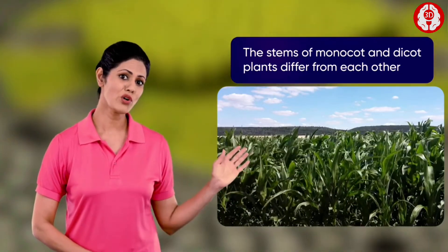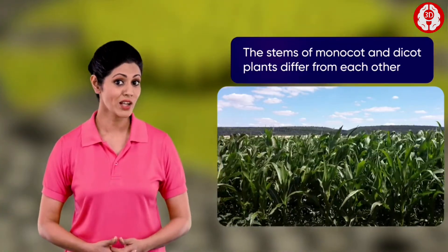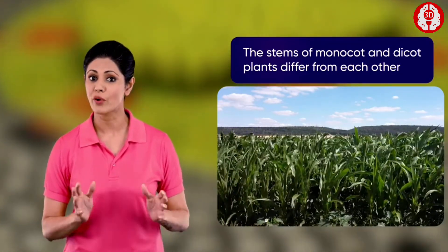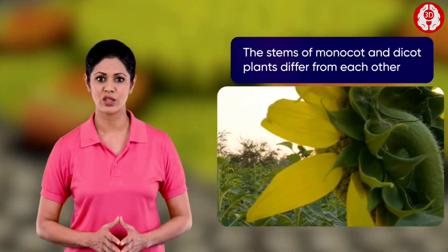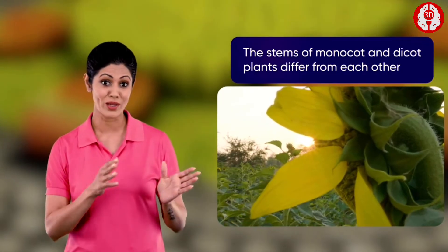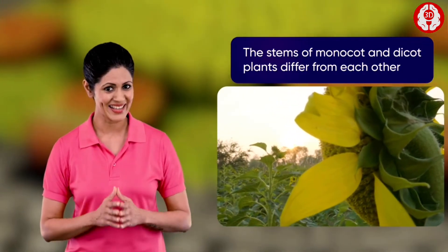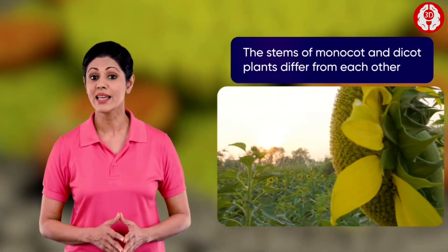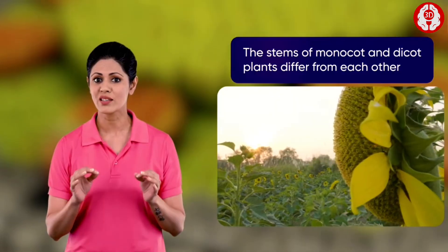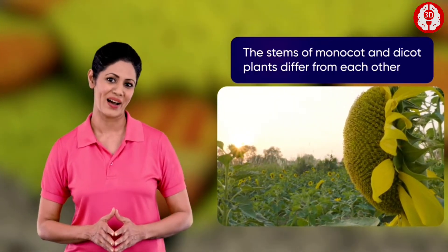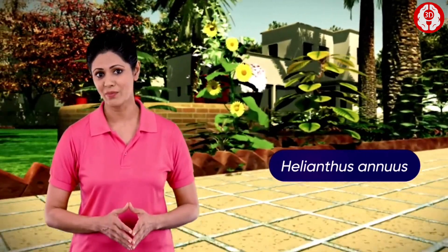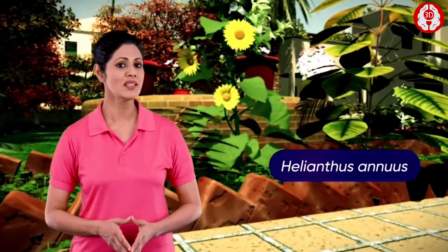The stems of monocot and dicot plants differ from each other. Can this thin stick-shaped structure be that different between the two plants? Let's learn exactly how they differ. Taking the transverse section of the stem of a dicot plant — the sunflower — Helianthus annuus is the scientific name of the sunflower, which is a dicot plant.